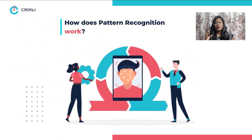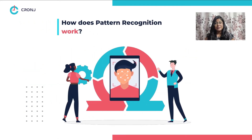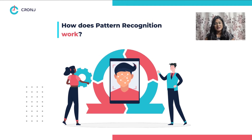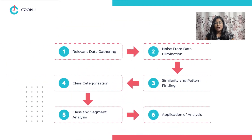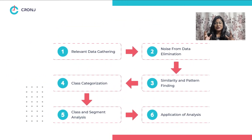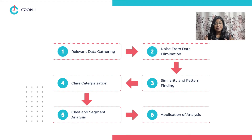But how does this technology, pattern recognition, work? Firstly, the technology gathers relevant information from various sources. Secondly, it removes noise and makes it suitable for algorithm analysis. Thirdly, it looks for similarities and patterns.